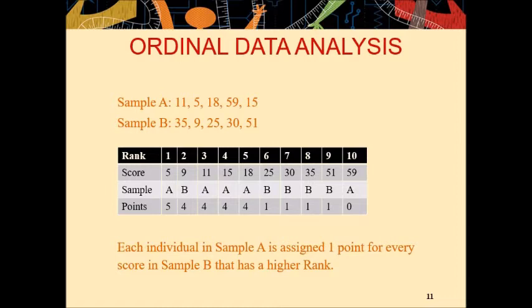This is the rank number 10. 59 belongs to A. You can see that in sample B, none of the score has higher rank than 59. Therefore, you will put a 0 points in 10th rank. So, I think this is very easy to understand. Now, how you will check whether you have correctly assigned these points or not?